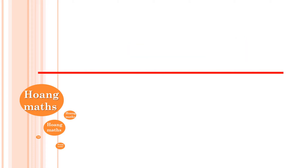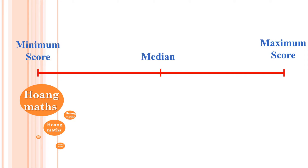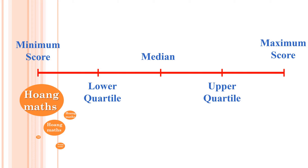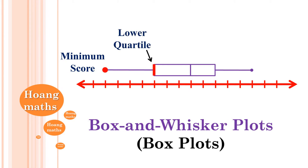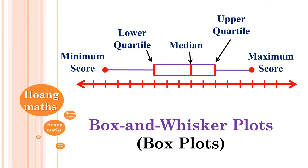If we have a set of scores ranging from lowest to highest, the middle score is called the median. The middle score of the first half is the lower quartile, and the median of the upper half is the upper quartile. These are the five-point summaries, which we can represent in a box-and-whisker plot, showing minimum score, lower quartile, median, upper quartile, and maximum score.